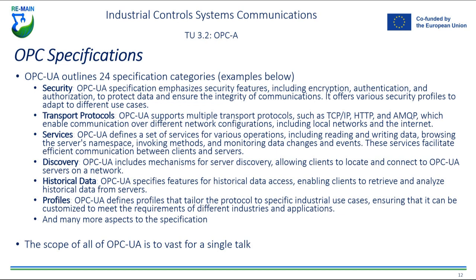Some limitations of OPC UA should also be considered. Complexity is a major one — OPC UA is a complex protocol with a wide range of features and functionality, making it challenging to implement and maintain, particularly for smaller organizations or those with limited technical expertise. There can be significant cost in implementing OPC UA, including investment in hardware, software, and infrastructure. There are also scalability limitations, especially when dealing with large volumes of data or complex systems. Finally, it remains vulnerable to cyber attacks if not configured or implemented correctly, which ties back to its underlying complexity — leaving systems exposed if improperly set up.